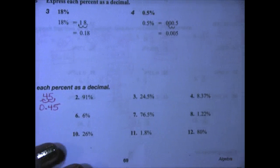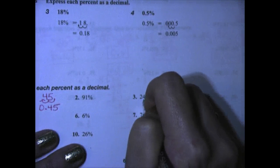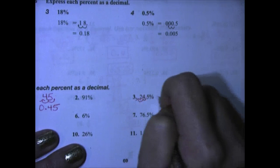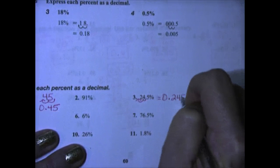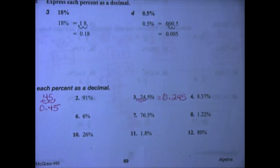Let's look at number three. 24.5%. We'll move that decimal one, two places. We get 0.245 or 245 one-thousandths.